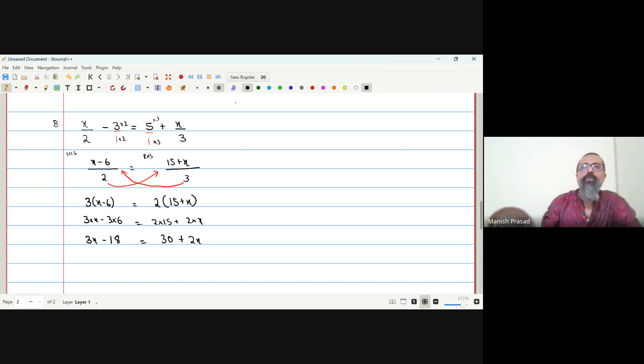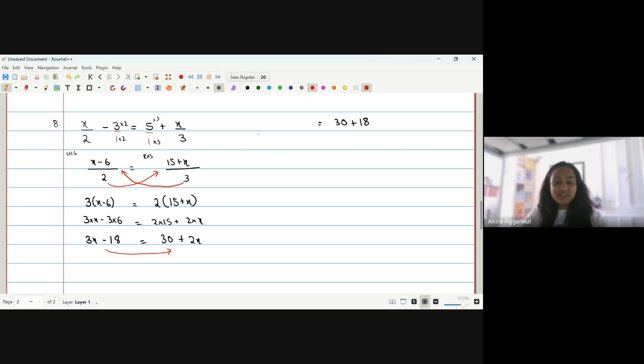2X. Now, our negative 18 is going to come this side. What is going to happen on our RHS? Positive will become negative.